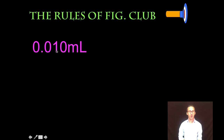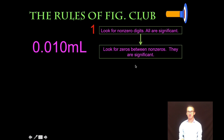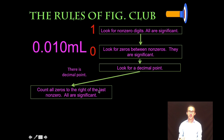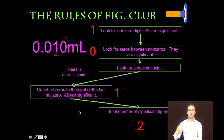One more example: 0.010 milliliters. How many significant figures? First rule of big club: look for non-zero digits — the 1. So we've got one sig fig so far. Rule number two: look for zeros between non-zeros — I've got a bunch of zeros here but none are wedged between two non-zero digits, so none of those zeros are significant using rule two. Rule three: look for a decimal point — we've got one. Rule four: count all zeros to the right of the last non-zero — I only have one non-zero digit, the 1, and I count only the zero to the right of it. The other zeros are just placeholders. So the total number of significant digits in this measurement is two sig figs.